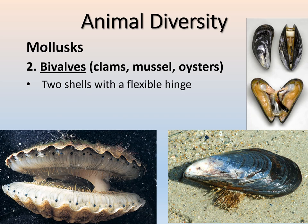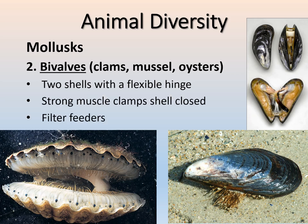The second group of mollusks is bivalves — clams, mussels, and oysters. 'Bi' meaning two: they have two shells with a flexible hinge and live inside their protective shells. They still have a stomach and anus. A strong muscle closes their shell, and they are filter feeders — they open slightly to bring in water and filter out food, which they then digest.